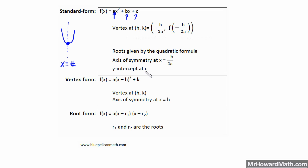The Y-intercept is going to be the C value. Think about it: our Y-intercept occurs when X is 0. So if we set the AX squared and BX terms to 0 — because when X is 0 those cancel out — we're only left with C. So our Y-intercept is simply the C value. Simple as that.